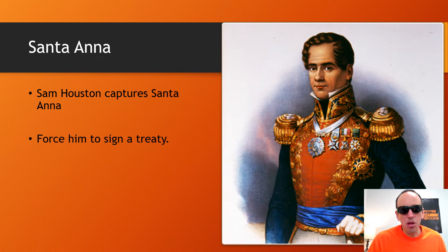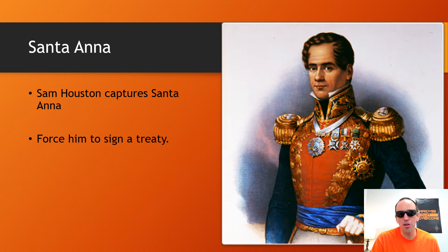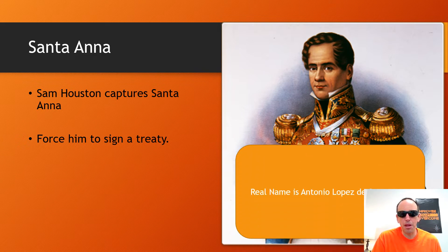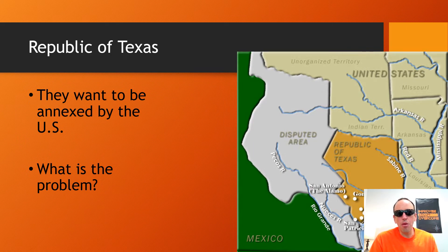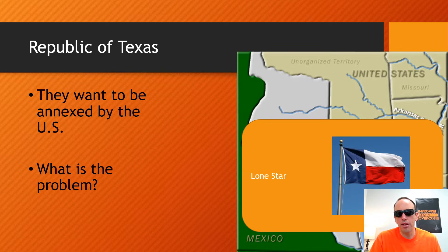Sam Houston later captures Santa Ana and forces him to sign a treaty. Legally that's called duress — when you're forced to sign something it doesn't count — and Santa Ana said he didn't willingly sign over Texas. His full name is Antonio Lopez de Santa Ana. Texas then wants to be annexed — added — to the United States. That's why there's one star on the Texas flag: they were a republic of one, their own country at that point.